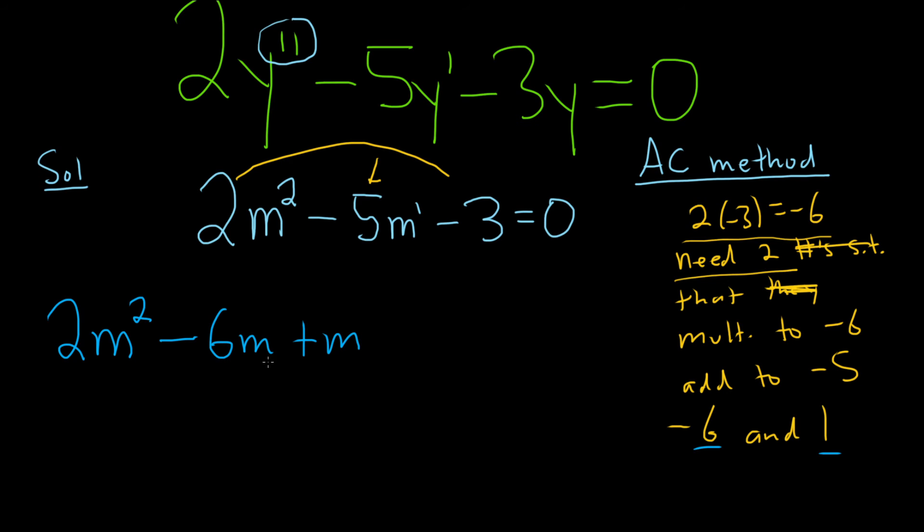And then minus 3. And notice how the magic just happened. Negative 6m plus m is minus 5m. So we just basically broke apart the minus 5 in a really cool way.